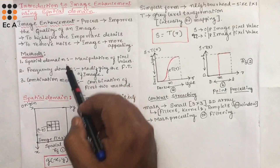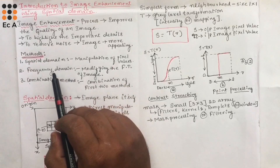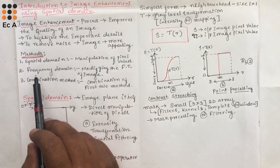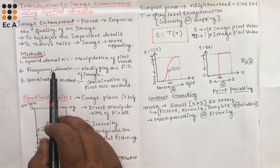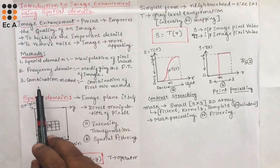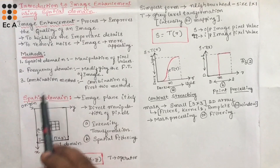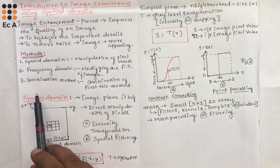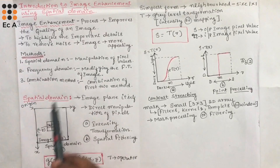There are three methods that can be used for image enhancement. The first one is spatial domain, the second one is frequency domain, and the third one is the combination method.